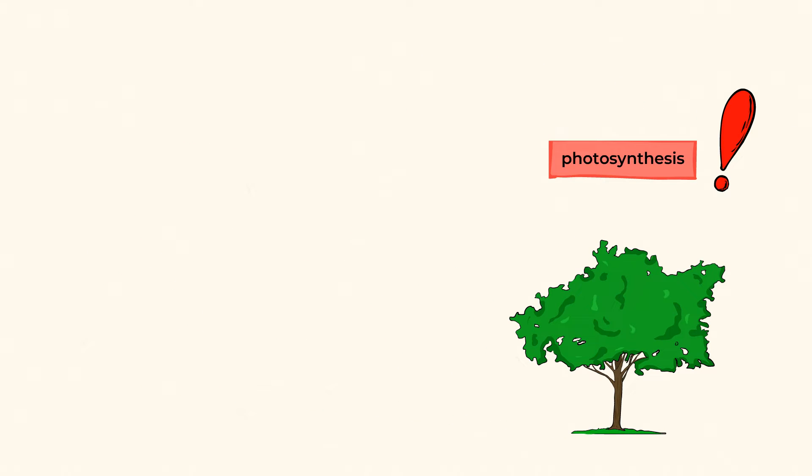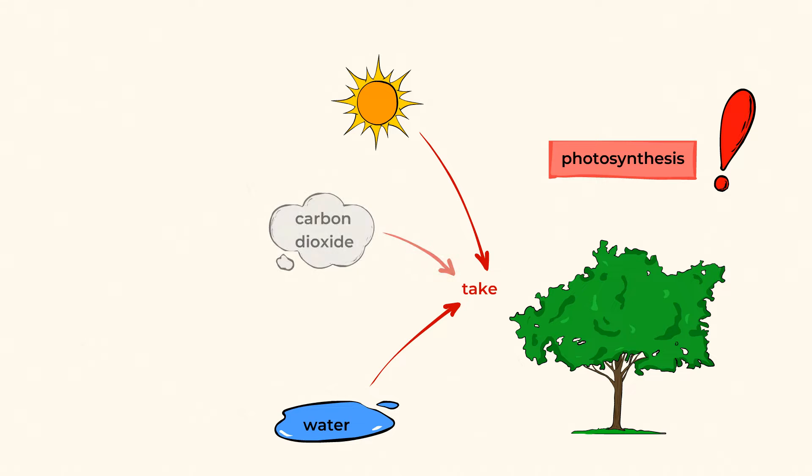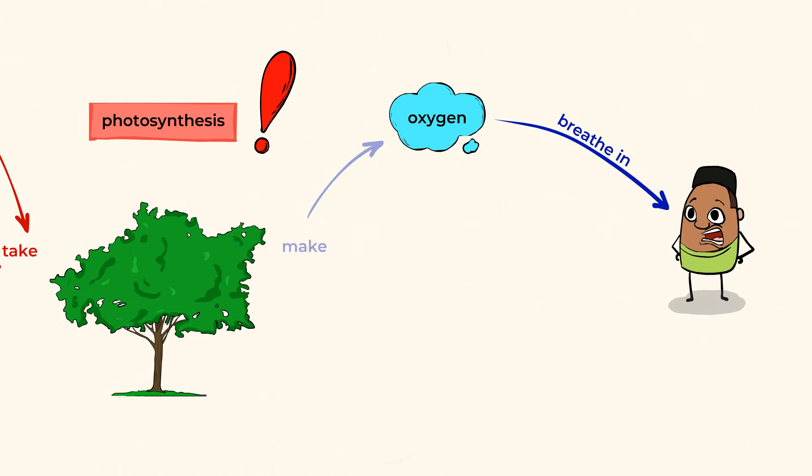In photosynthesis, a plant will take light from the sun, it'll take water, and the carbon dioxide we breathe, and make oxygen and glucose, a type of sugar.